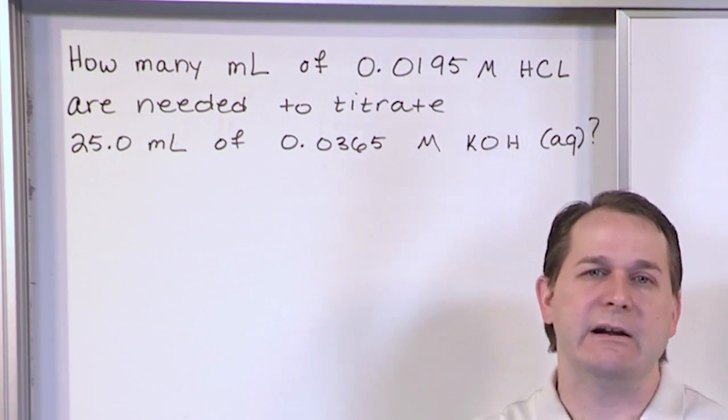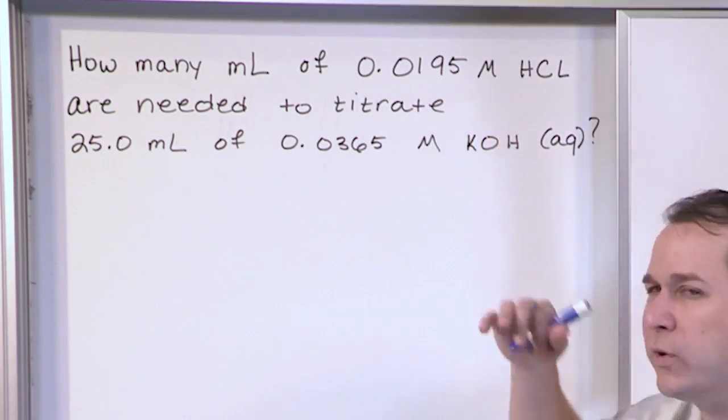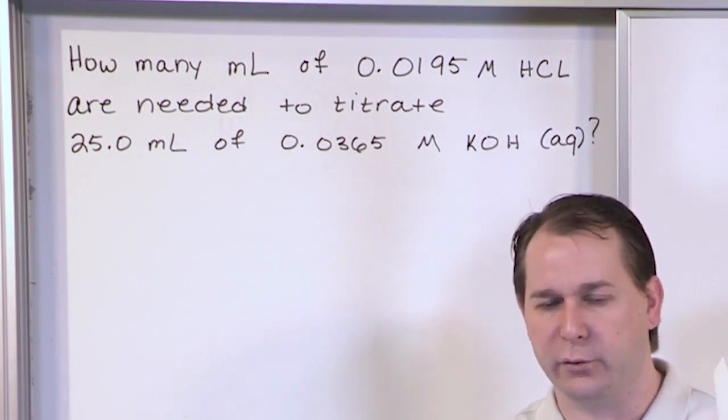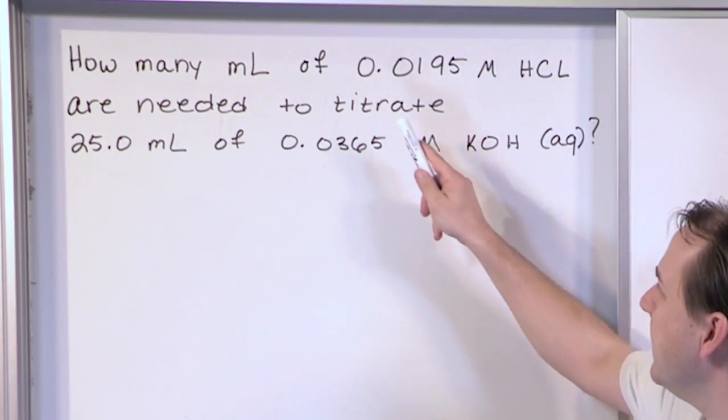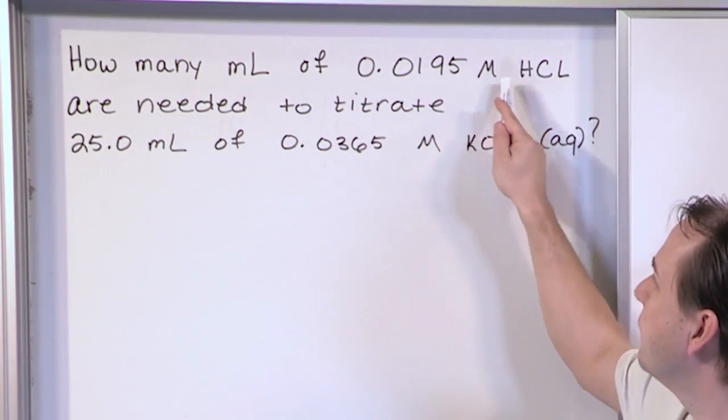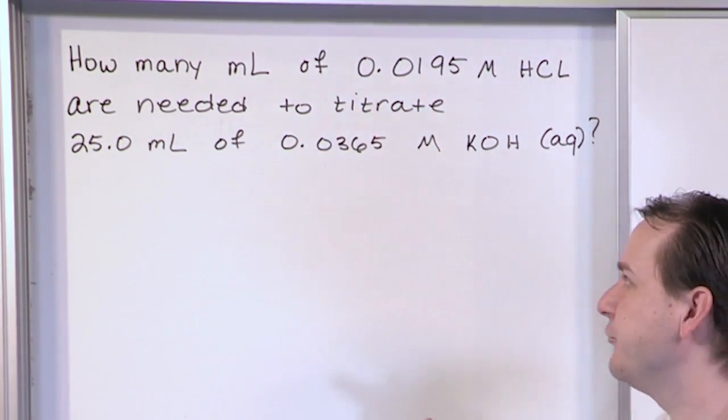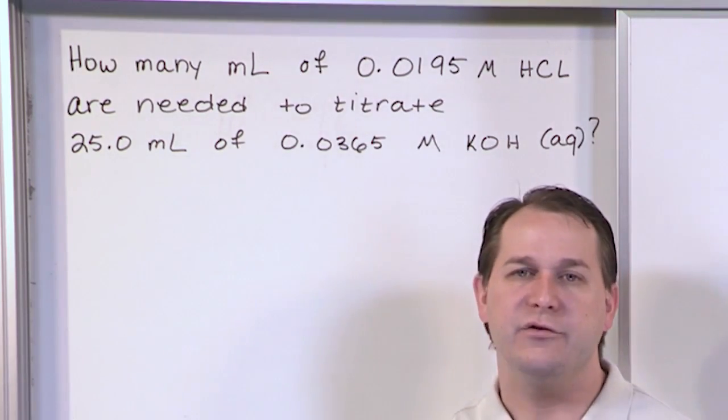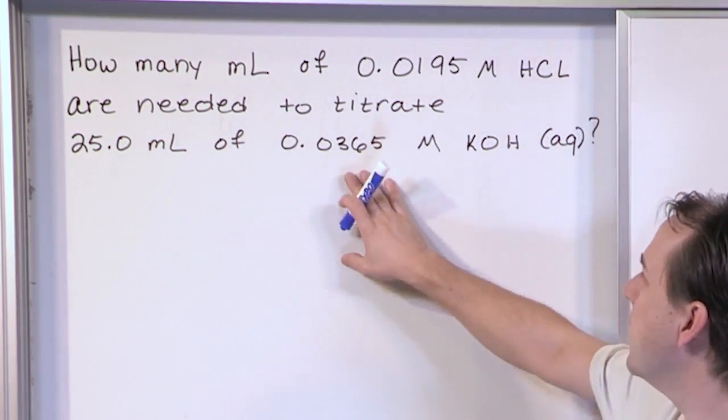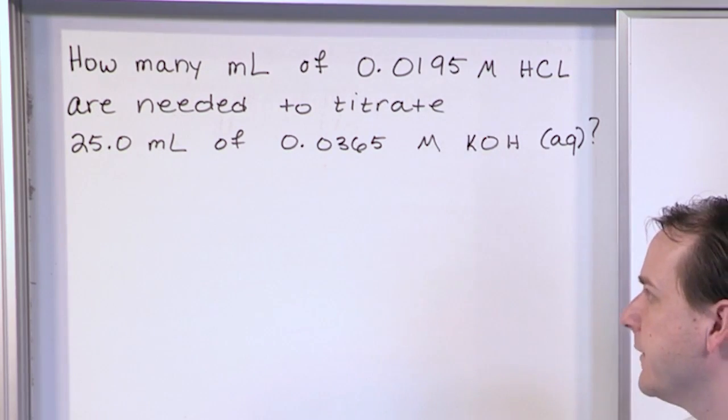So the question is, we're trying to find out how much of the acid. If you really want to boil this down to just sort of a common theme, how many milliliters of a certain concentration acid do we need to actually titrate, which means to neutralize, to neutralize this much of this concentration of hydrochloric acid.